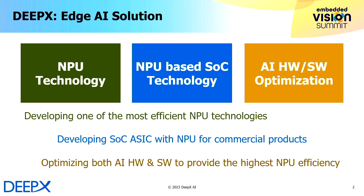Before I go to the technical detail, let me introduce our company DBEX. DBEX is a fabless AI chip maker focusing on Edge AI products, aka NPUs. As you might know, NPU stands for Neural Processing Unit, which is a specialized ASIC device for deep learning model inference.